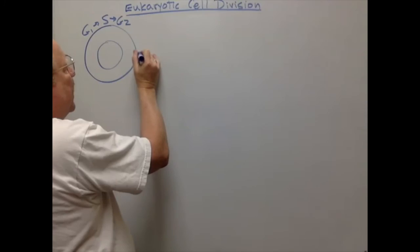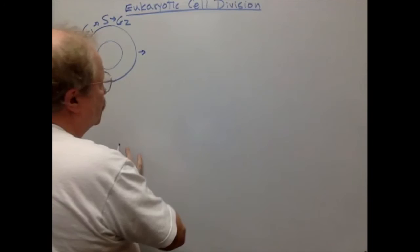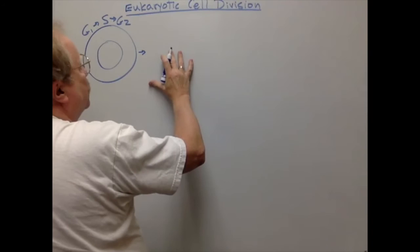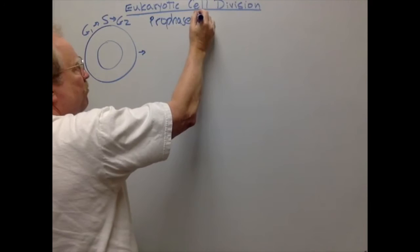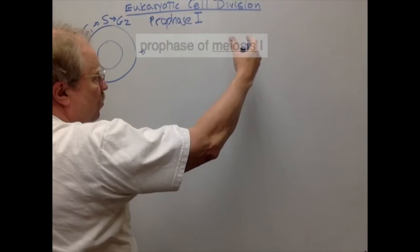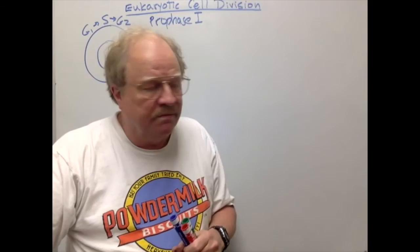We're going to have two divisions: this cell divides into two cells, then those two cells divide into four. The stages of meiosis are given the same names as mitosis. The first phase is prophase one, then metaphase one, anaphase one, and telophase one. Then meiosis two: prophase two, metaphase two, anaphase two, and telophase two.